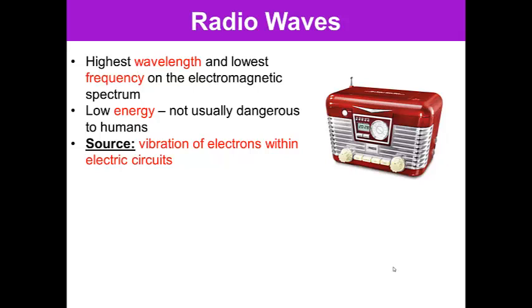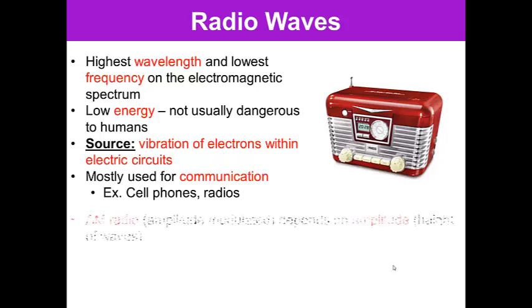The source is the vibration of electrons within electric circuits, so within the circuits of your radio or the microphone or whatever is doing the transmitting is the vibration of electrons. It's most commonly used for communication. For example, cell phones and radios both use radio waves.